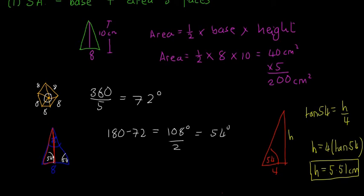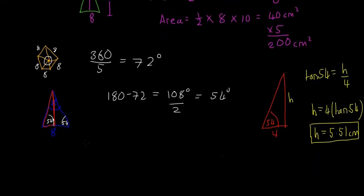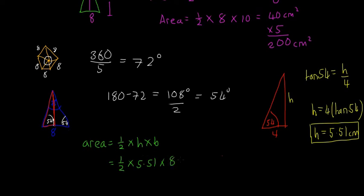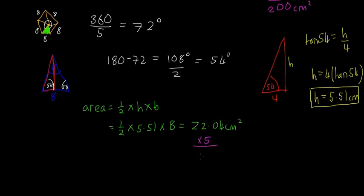Now we have the base and height of the triangle so we can find its area: half × 5.51 × 8 = 22.04 centimetres squared. That's the area of just one of the small triangles inside the pentagon. There are five of them, all the same, so multiplying by 5 gives us the area of the base: 110.2 centimetres squared.